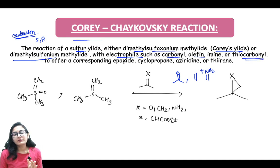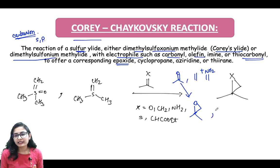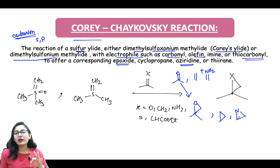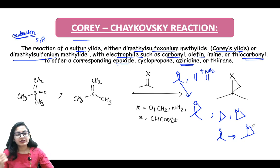When reacting with a carbonyl it gives an epoxide; with an alkene it gives a cyclopropane; with an imine it gives an aziridine — the three-membered ring containing a nitrogen atom. If the starting bond is a carbon-sulfur double bond, it gives a thiirane, which is the same as epoxide but with oxygen replaced by sulfur.